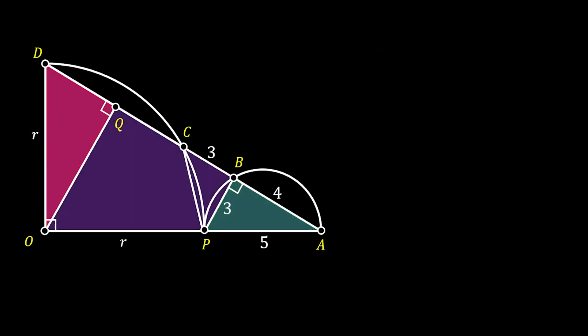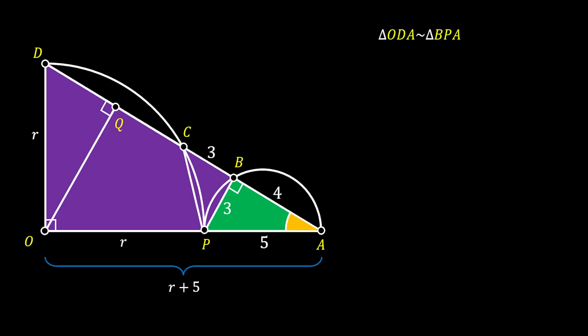Now let's set our attention to the purple right triangle OAD. This triangle has a height of R and a base of R plus 5. Let's notice the acute angle at point A of this triangle. Going back to the previous right triangle PAB, this triangle shares the same angle at point A with our purple triangle. Since both the purple and green triangles are right triangles, their remaining angles are congruent, so triangle ODA must be similar to triangle BPA.